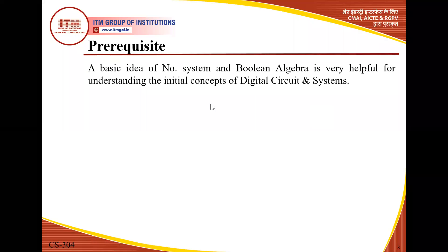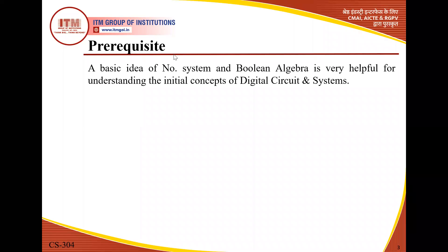Moving to the prerequisites — a basic idea of number systems and boolean algebra is very helpful for understanding the initial concepts of digital circuits and systems. In BT104 and BEE, which are first and second semester subjects, we already discussed number systems and boolean algebra, so all students have this basic concept as a prerequisite.